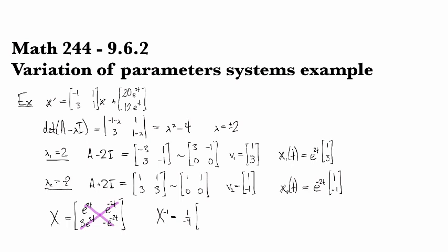We switch the diagonal entries, so negative e to the minus 2t and e to the 2t get swapped. On the off diagonals they get negated, so this becomes minus e to the minus 2t and this becomes minus 3e to the 2t.